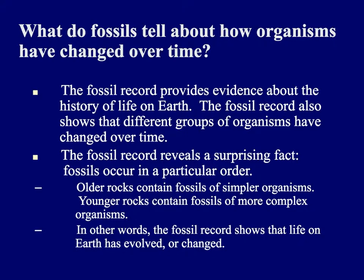By studying the fossil record, we can tell how life on our planet has changed. The fossil record shows evidence about the history of life on Earth, and it also shows that different groups of organisms have changed over time. We know that in the older, deeper rocks, the only thing we find are very simple, very elementary organisms — microscopic creatures. In the younger layers, we get up to the age of the dinosaurs, and as we come closer to the present day, we find the dinosaurs disappeared, then the giant mammals, and then we come on until today. So the fossil record shows that life on Earth has changed and keeps on changing.